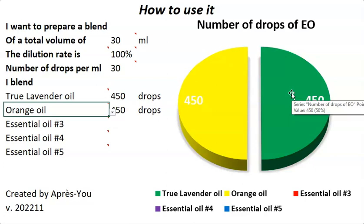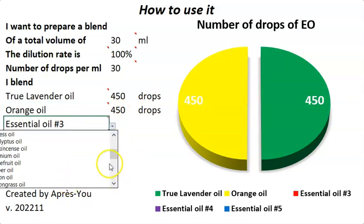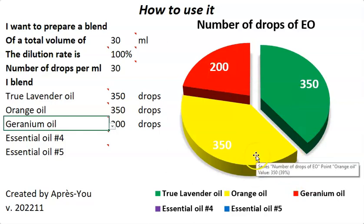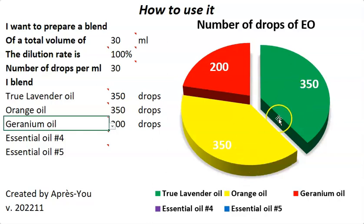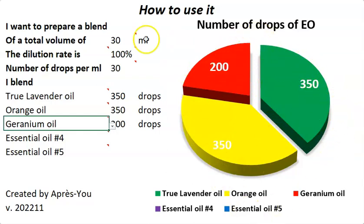If I want to add another oil — let's move to geranium for example — you will see that the numbers change a little bit. This time you have to add 200 drops of geranium, which is a little less than the lavender or orange, which each need 350 drops. This makes sense because geranium is a stronger oil, olfactively speaking, than orange and lavender, so you need a little bit less of geranium in order to balance the blend.